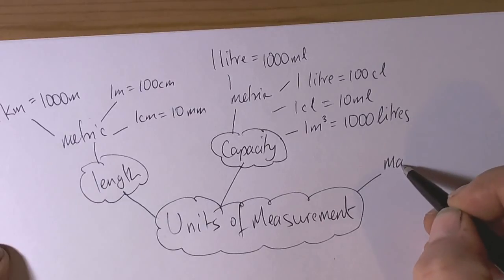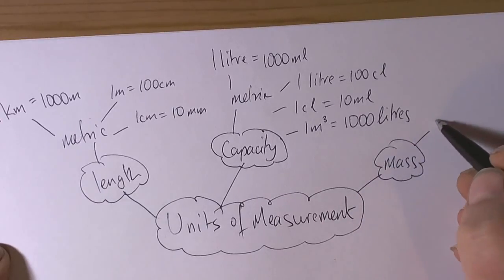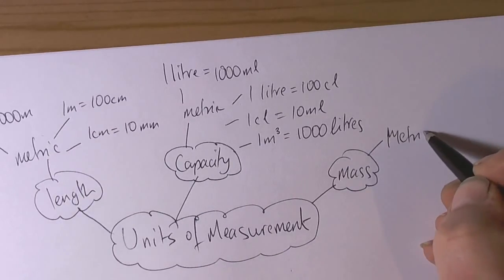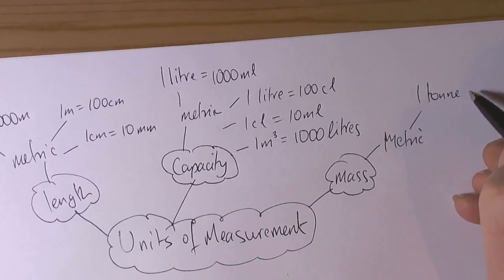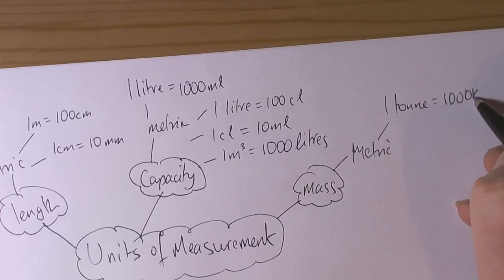We've also got mass, or weight, and common ones again are metric. So we've got one tonne equals a thousand kilograms. Again, kilo means thousand, so a thousand of them in a tonne.